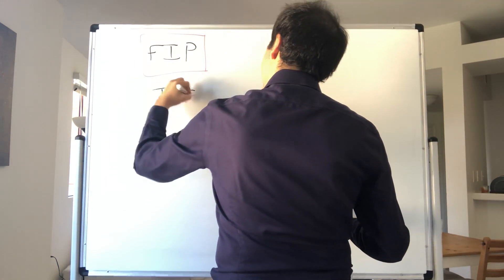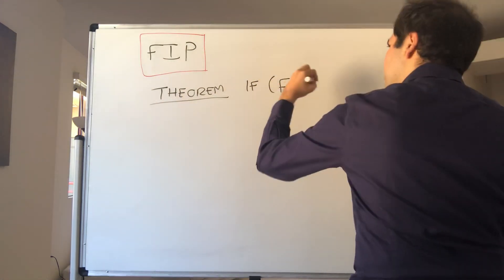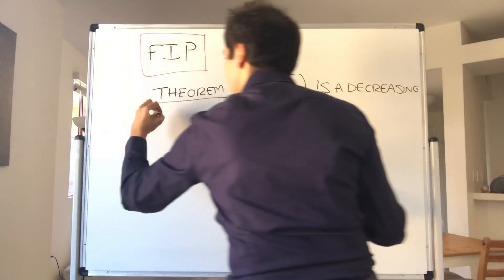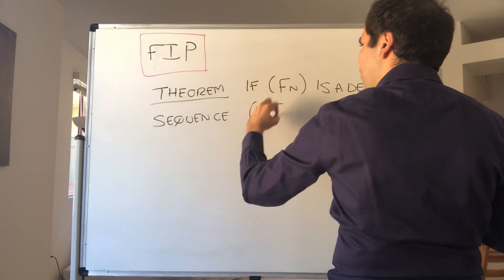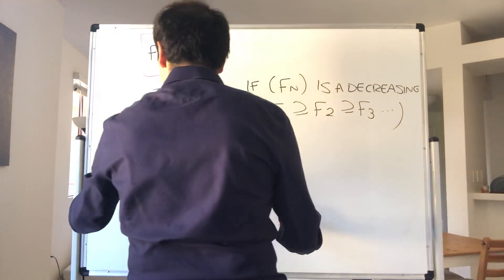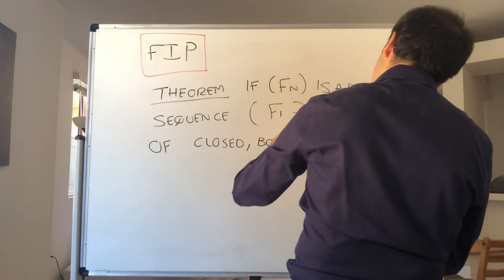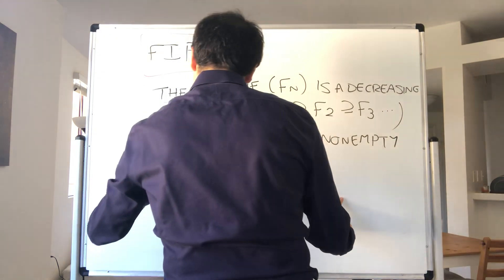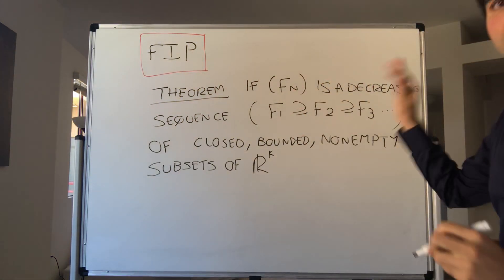So, theorem — the finite intersection property. If fn is a decreasing sequence, and decreasing just means that f1 is bigger than f2, which is bigger than f3, and so on, of closed, bounded, and non-empty subsets of RK, then the intersection has the same property.